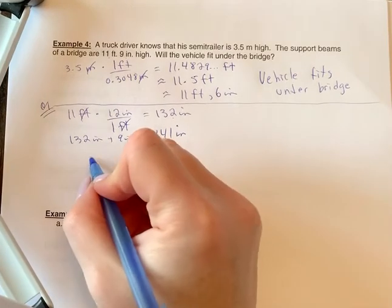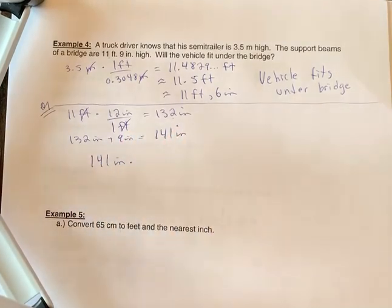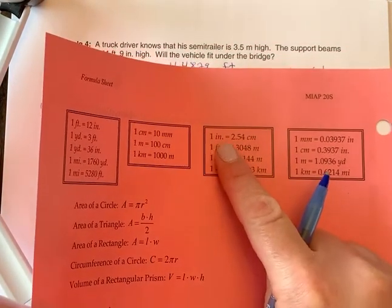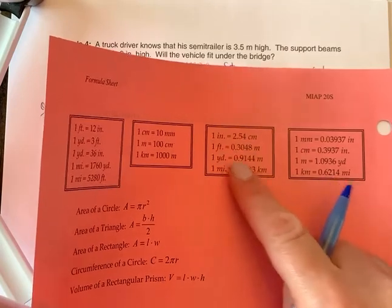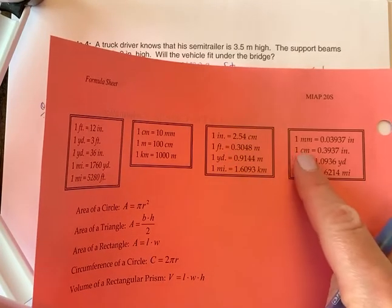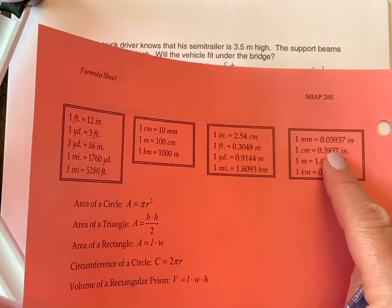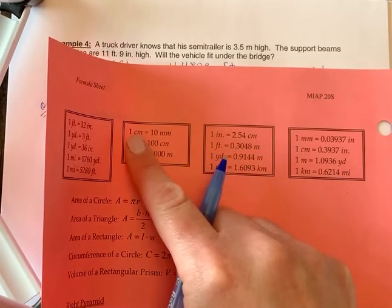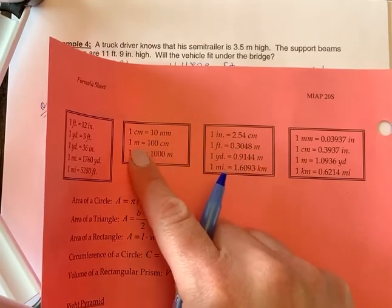So I'm going to take 141 inches and I want to convert that to meters now. So let's take a look at our formula sheet on this side here. So I have inches to centimeters. If you take a look, I have centimeters to inches here, but I don't have inches directly to meters, but I know the relationship between centimeters and meters - one hundred centimeters is one meter.